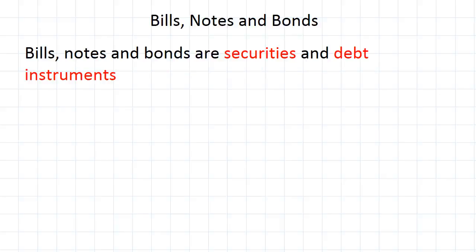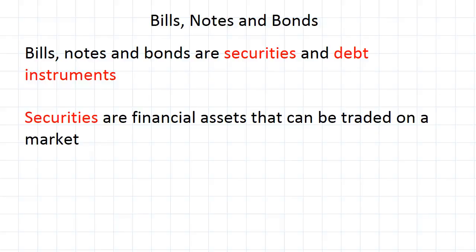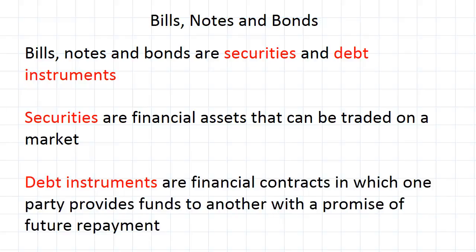Bills, notes, and bonds are both securities and debt instruments, so these are both important terms. The fact that they are securities means that they can be bought and sold on the market, such as on the Australian Securities Exchange. The fact that they are debt instruments means that they are a contract in which one party lends money to another on the promise that they will eventually be repaid, typically with interest.